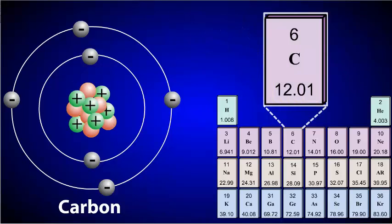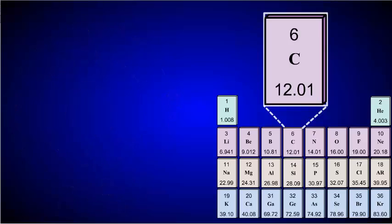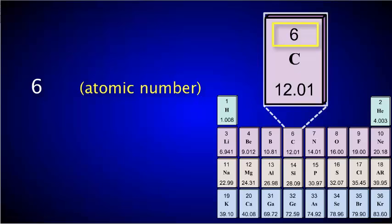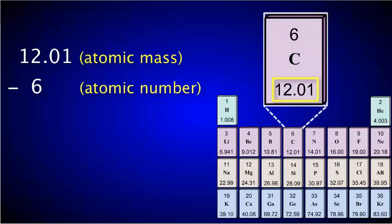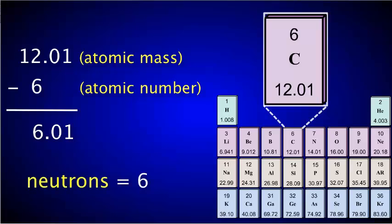If you know the atomic number and atomic mass, you can determine the number of neutrons in an element. Simply subtract the atomic number, or the number of protons, from the atomic mass, the number of protons plus neutrons, and take the closest whole number. So 12.01 minus 6 equals 6.01, which rounds to 6. So the number of neutrons in a neutral atom of carbon is 6.